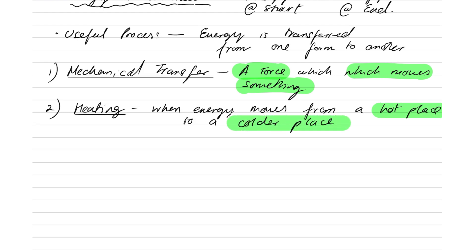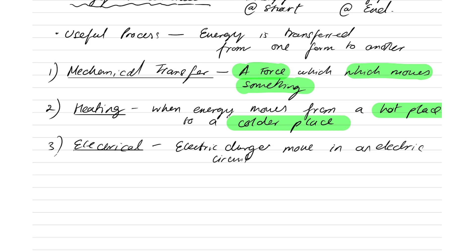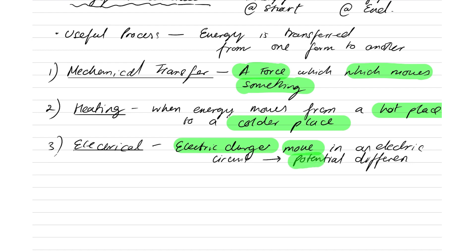The next type of energy transfer is electrical energy transfer — this is when electric charges move. In chemistry, you've learned that there are protons, neutrons, and electrons. Protons and electrons are electrically charged, so electrical charges are simply protons and electrons. When these protons and electrons move in an electric circuit, they move because of something we call a potential difference. We call this energy transfer electrical energy transfer. So the key points: electric charges move due to a potential difference.